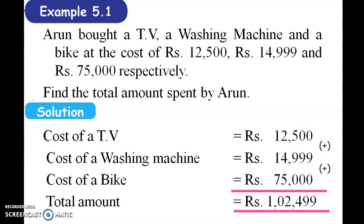For example, Arun bought a TV, washing machine, and a bike at costs of 12,550, 14,999, and 75,000 respectively. Find out the total amount he spent.